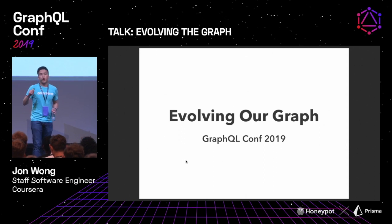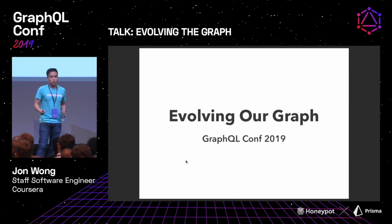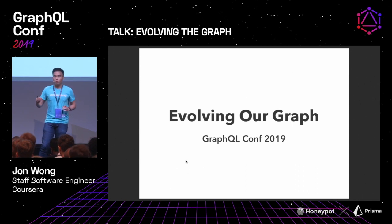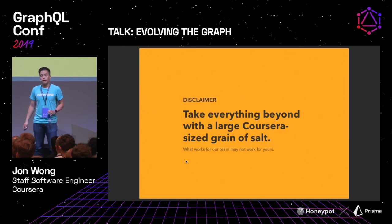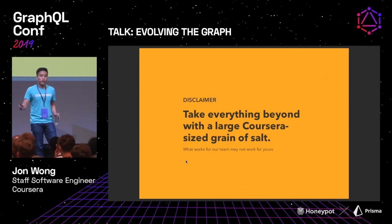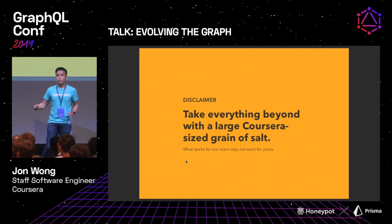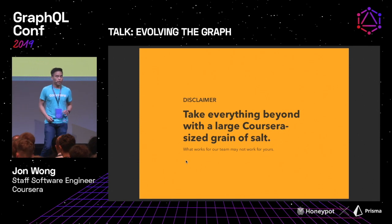I'm actually going to talk about evolving our graph — and by "our" I mean Coursera. I think this is really important because a lot of these words you've heard today, we haven't really talked about how they pan out over time. Fat disclaimer: take all of this with a large Coursera-sized grain of salt, because this is the story of GraphQL at Coursera. It is not the story of GraphQL at Facebook or anywhere else. I do think there are some key lessons to learn, but just understand that.